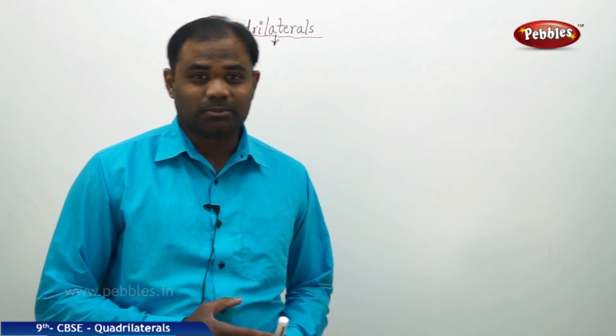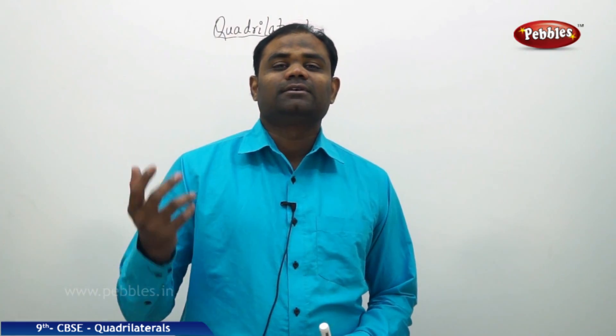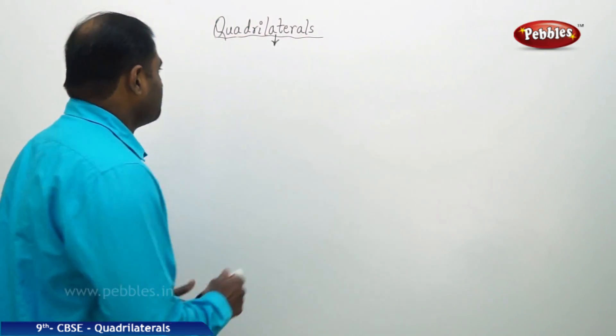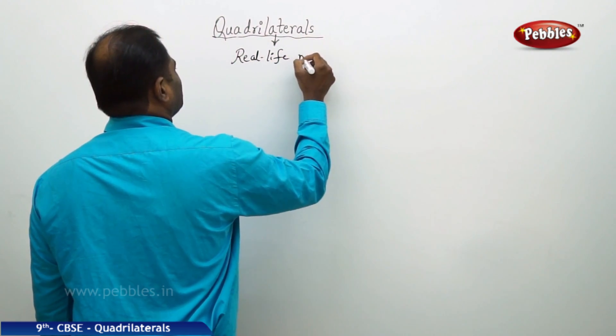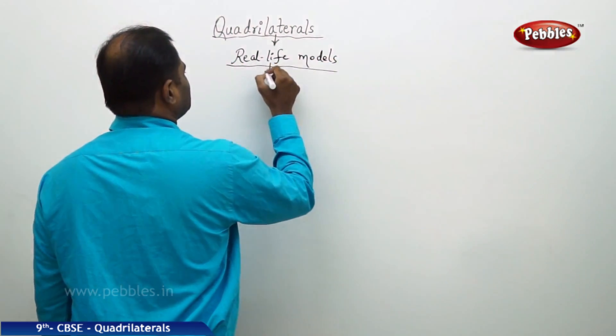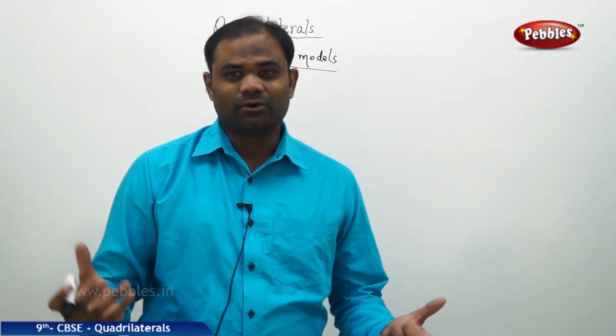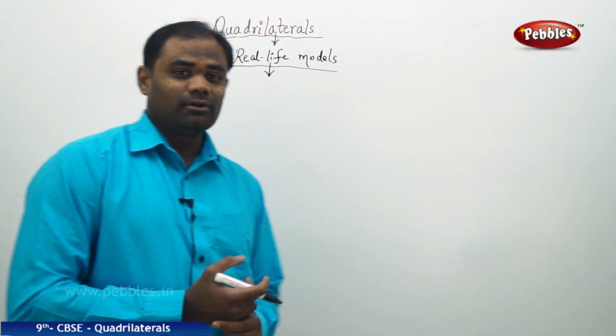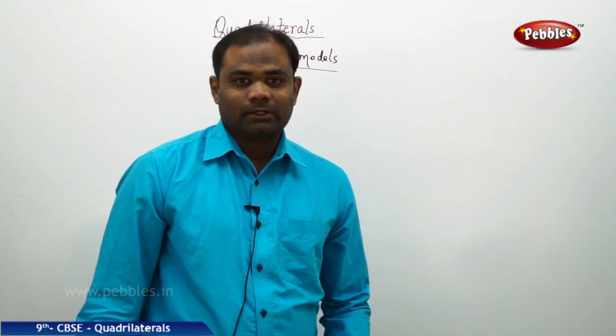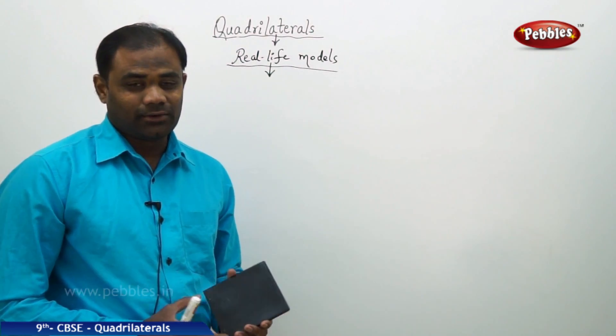Now that we have discussed quadrilaterals and their geometrical properties in brief, let's see the different types of structures which have the shape of a quadrilateral. Let's investigate the different possible types of quadrilaterals through real-life objects. Today's session is about applications of quadrilaterals. Let's investigate real-life models which connect with quadrilaterals and see how quadrilaterals appear in different shapes.